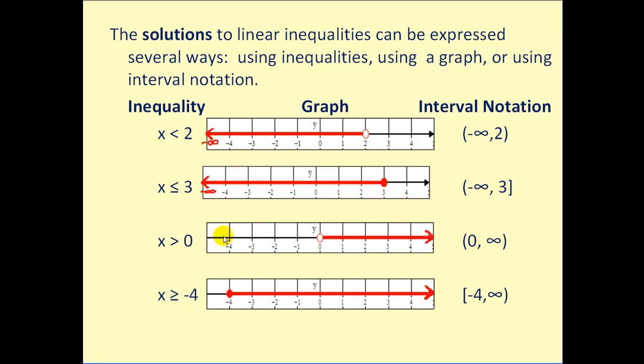And these next two examples are similar except now we have greater than and greater than or equal to. So now our arrow goes to the right, which means we'd be approaching positive infinity, which shows up in our interval notation.